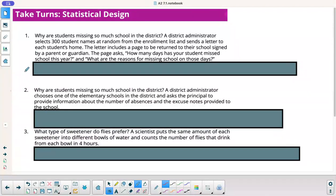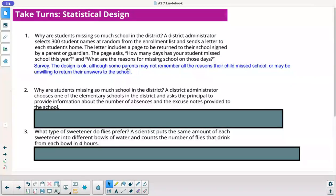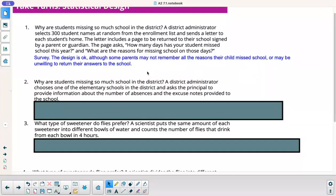So number one, why are students missing so much school in the district? A district administrator selects 300 student names at random from the enrollment list and sends a letter to each student's home. The letter includes a page to be returned to their school signed by a parent or guardian. The page asks, how many days has your student missed school this year, and what are the reasons for missing school on those days? So I'd say, obviously, this is going to be a survey. The design is okay. You know, we have a large sample space, 300 people, and it's okay. But the problem is some parents may not remember all the reasons their child missed school. You know, kids, they're not going to remember days earlier in the year if it's later. And some parents might not return the survey to the school.